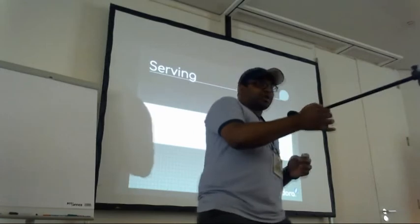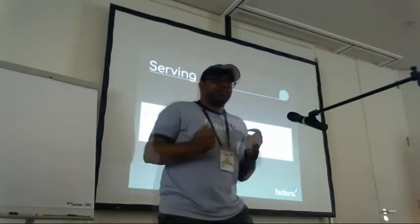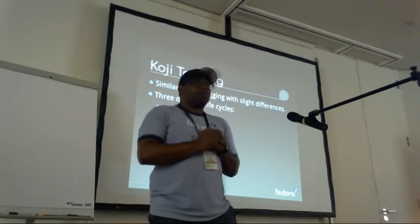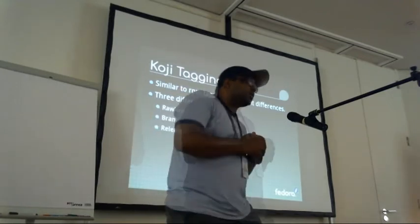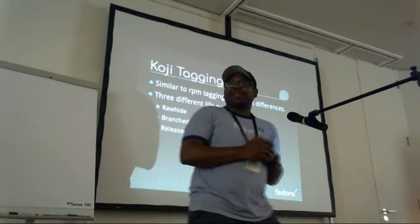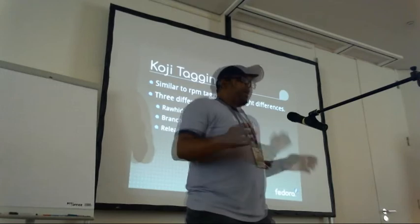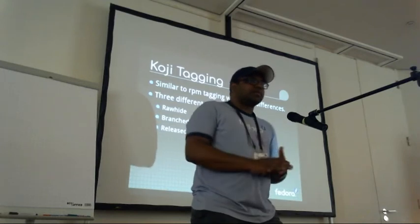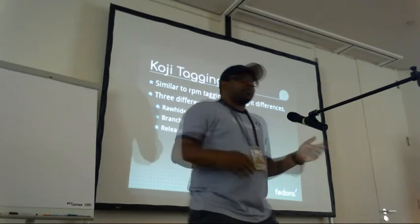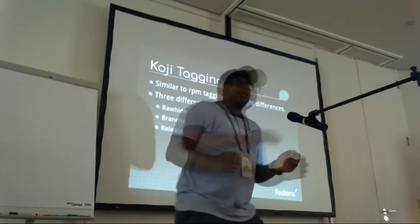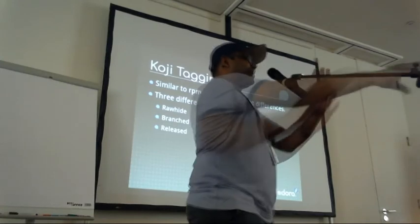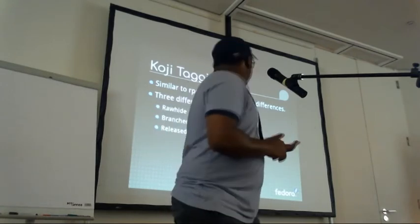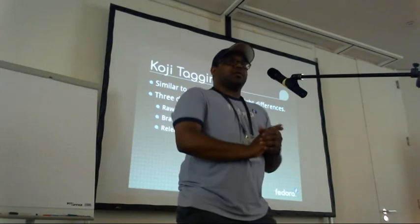Now, about how to get these modules into the repos — basically, Koji tagging. It's similar to normal RPM tagging with slight differences. We have three different lifecycles: one is Rawhide, the other is branched, and then released. We'll go through each of them.